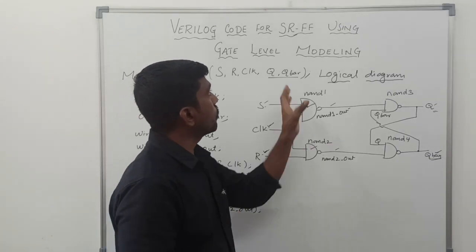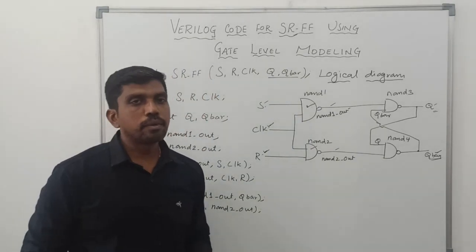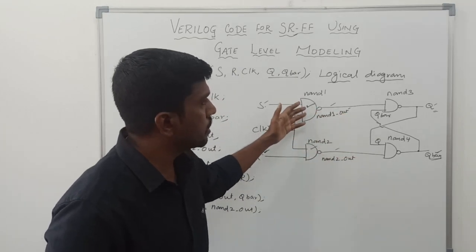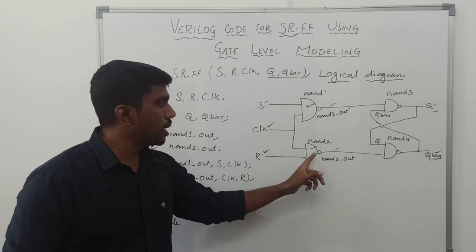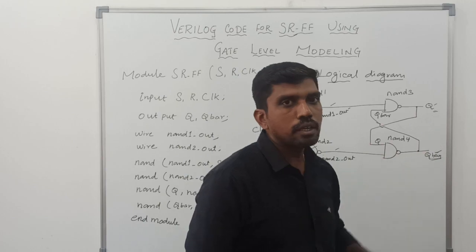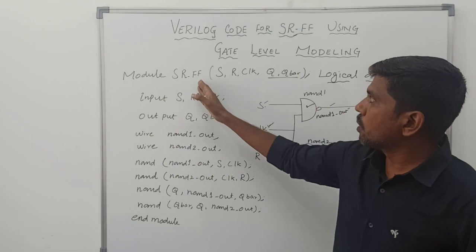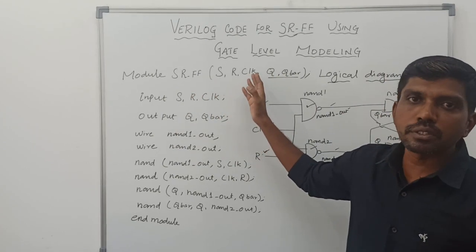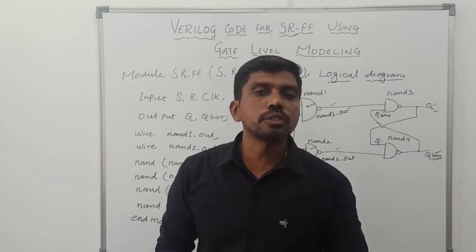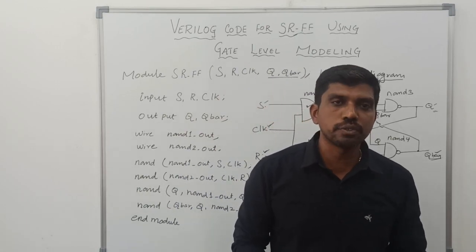This is the simple way to write Verilog HDL code for SR flip-flop using gate level modeling. First draw the logical diagram, then assign gate names NAND1, NAND2, NAND3, and NAND4, assign input and output values, and write the module syntax with parameters in brackets. I hope you understand the concept well. If you are watching for the first time, kindly subscribe and support us. Thank you.